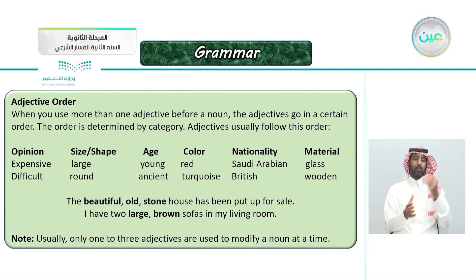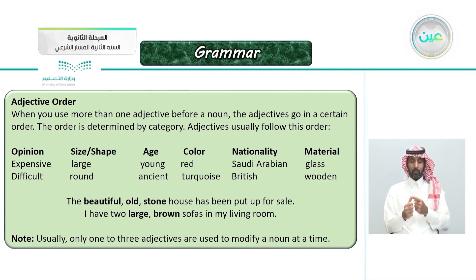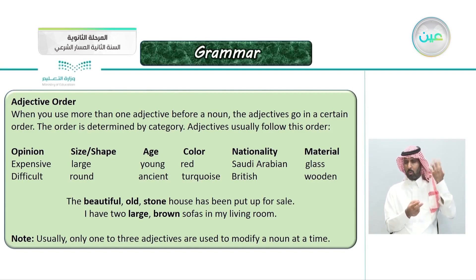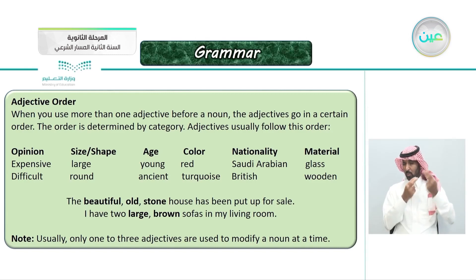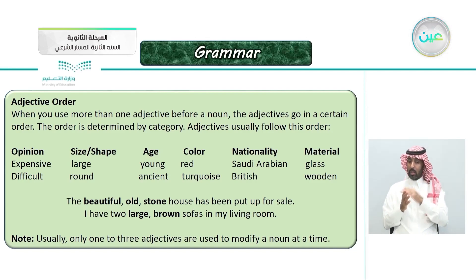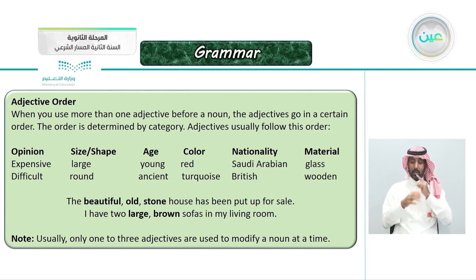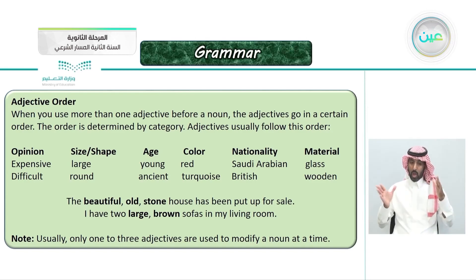For example, 'the beautiful old stone house' — 'beautiful' is opinion, 'old' is age, 'stone' is material, and we're describing the house. 'The beautiful old stone house has been put up for sale.' The second example: 'I have two large brown sofas in my living room.' 'Large' is size, 'brown' is color — size or shape comes before color. Usually only one to three adjectives are used to modify a noun at a time.